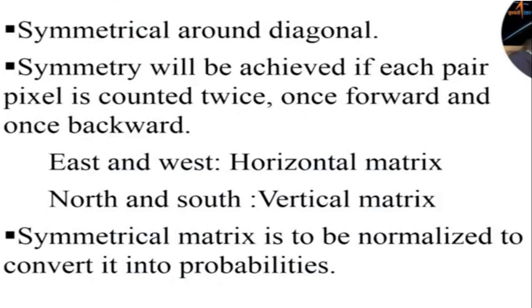The next property: it is symmetrical around the main diagonal. Symmetry will be achieved if each pair of pixels is counted twice — once forward and once backward. East and west form the horizontal matrix; north and south form the vertical matrix. The symmetrical matrix is to be normalized to convert it into probabilities.